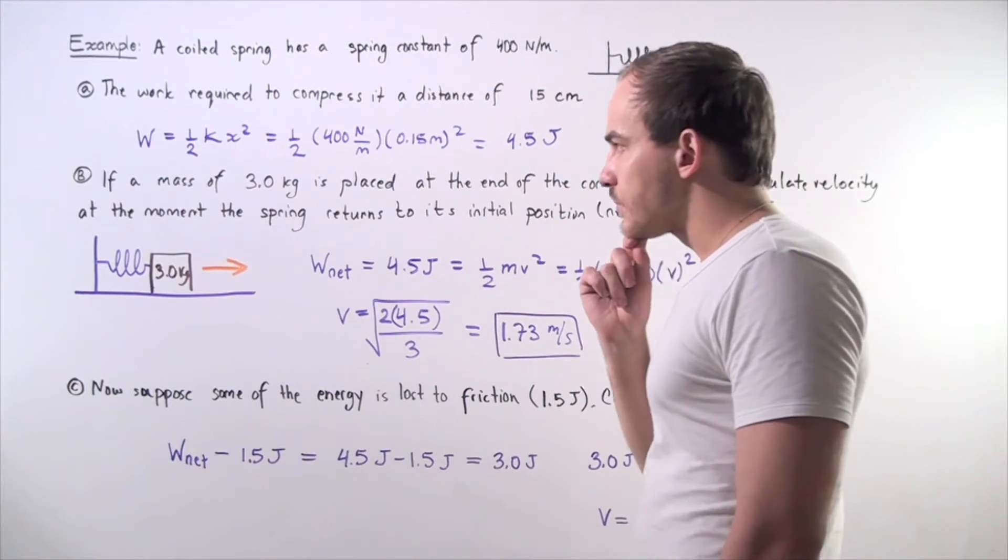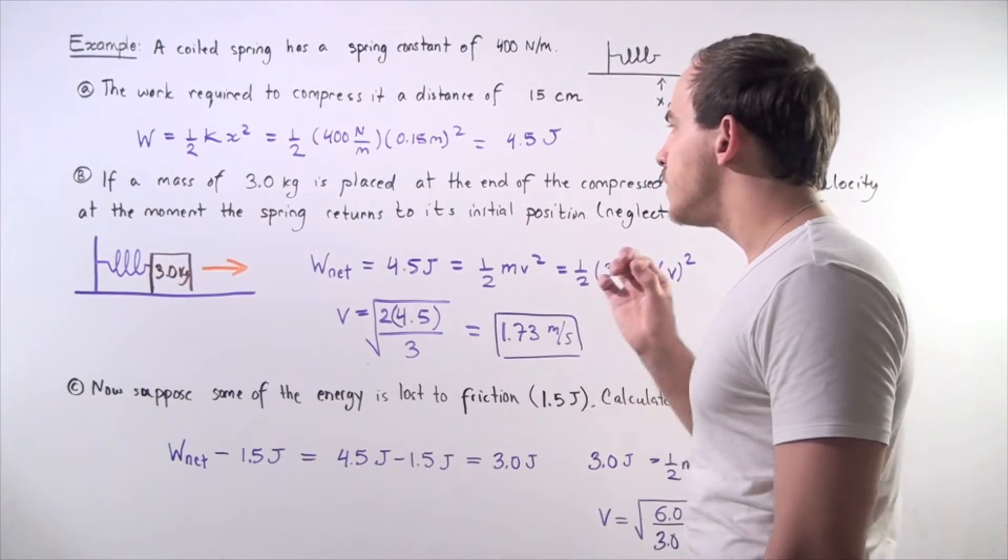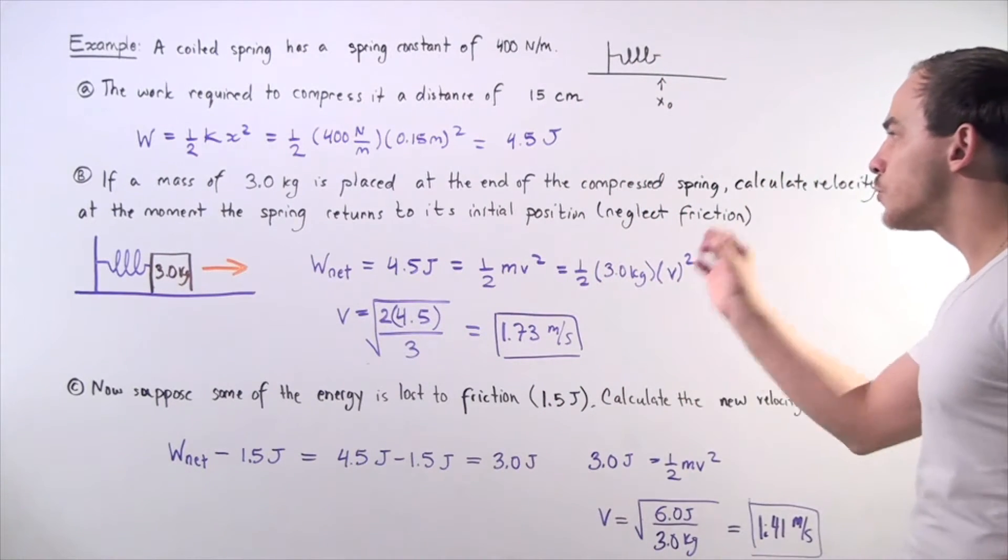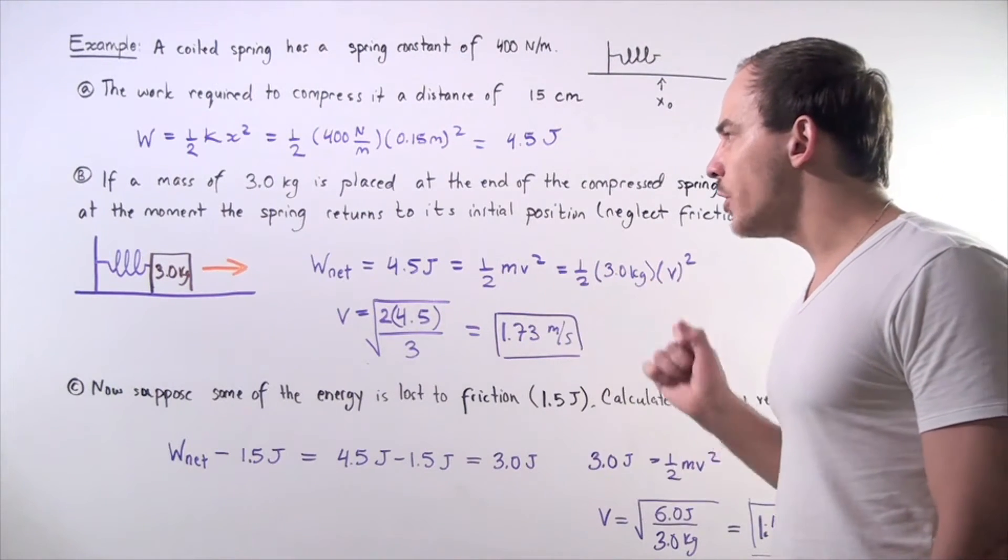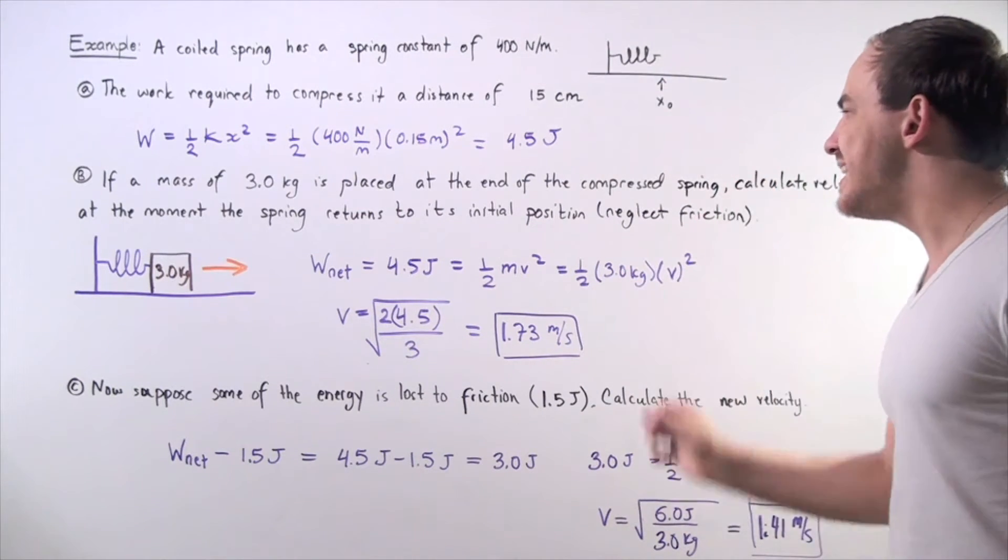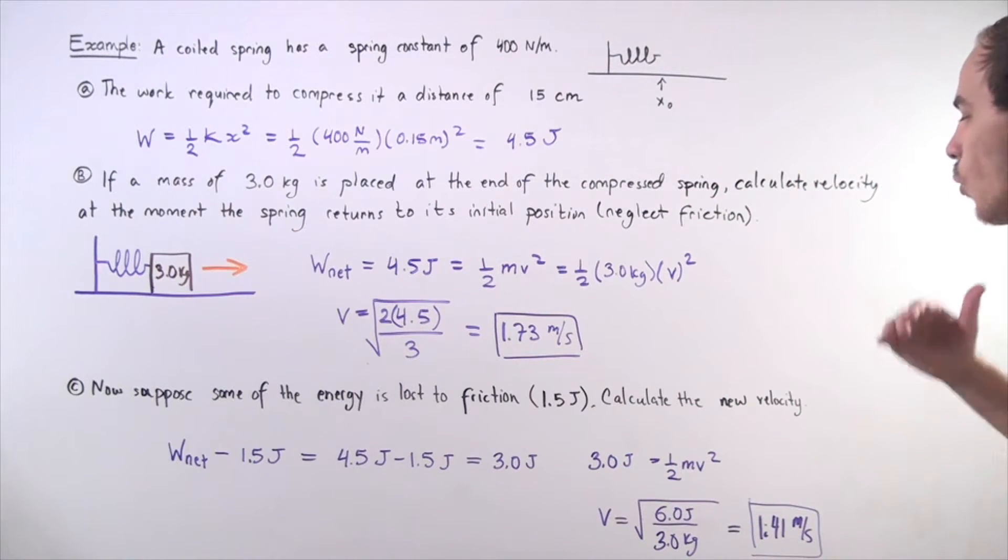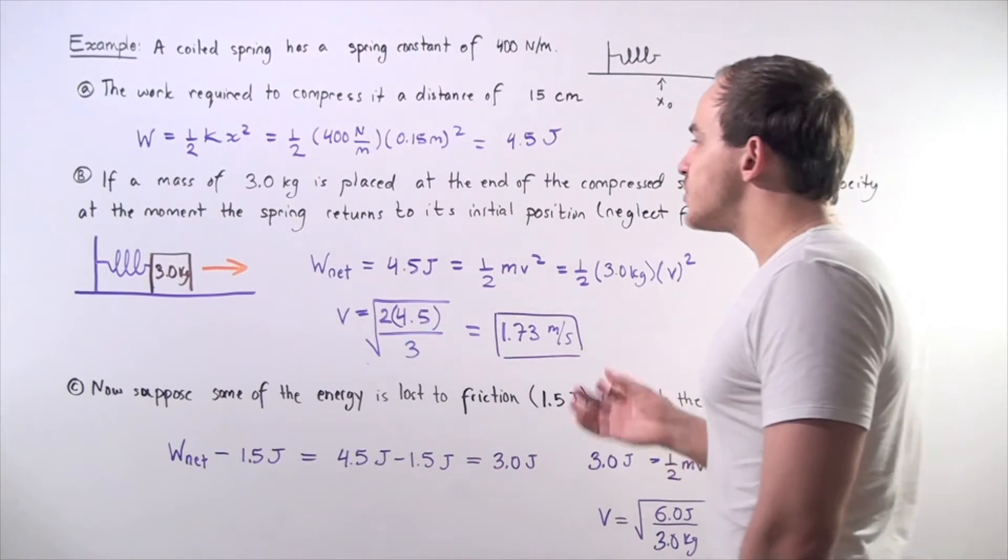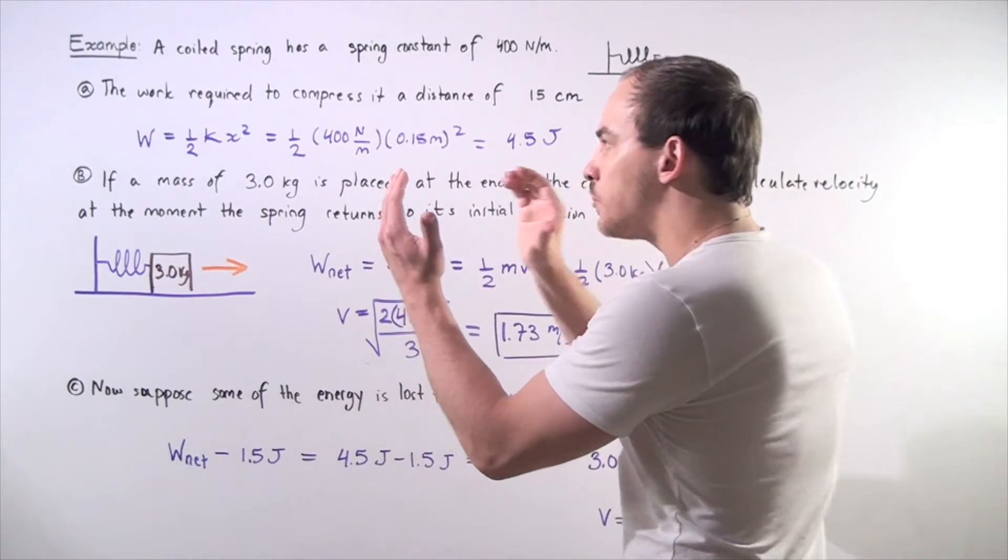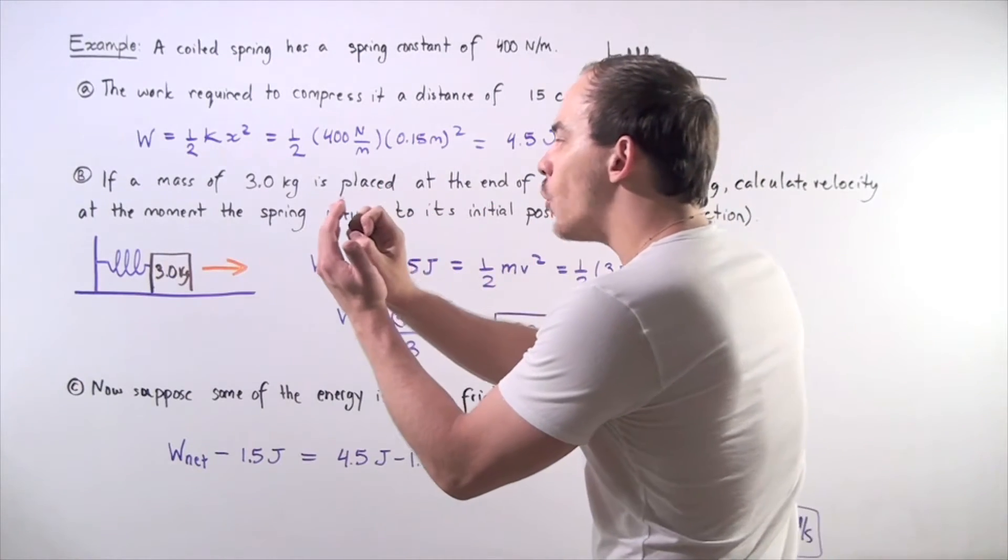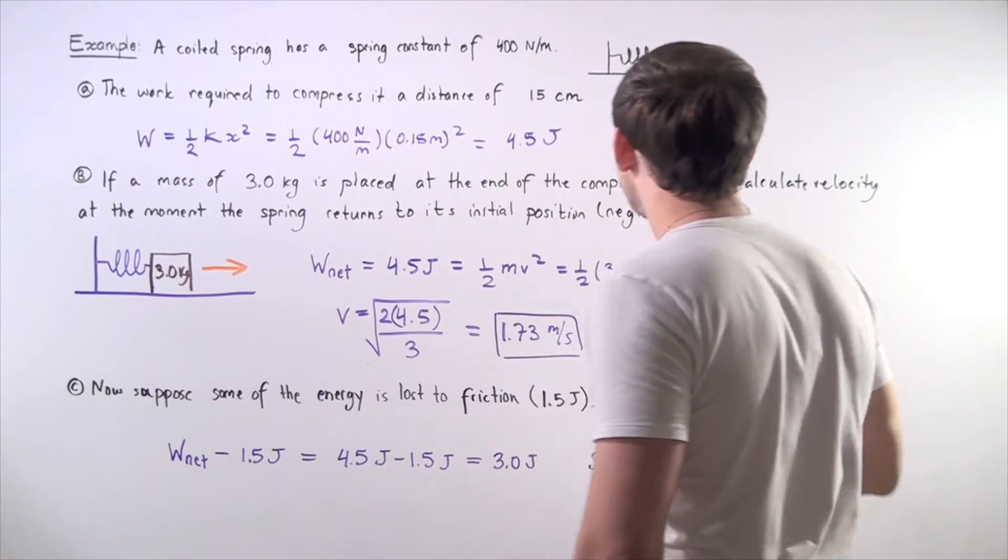Let's go to part B. If a mass of 3 kilograms is placed at the end of the compressed spring, calculate the velocity at the moment the spring returns to its initial position. We're neglecting friction, so we're dealing with a frictionless place. That means all the energy that was stored in the spring because we compressed the spring will now go into increasing or accelerating our block of 3 kilograms.